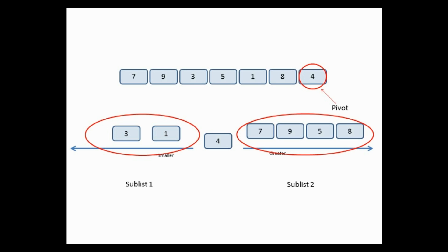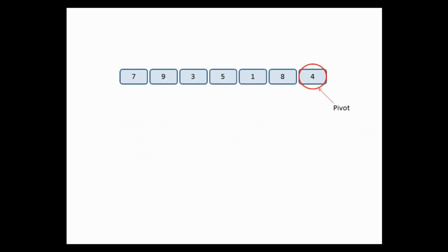The question is: how do we place all the smaller elements to the left of the pivot and all the greater elements to its right? Here is our array with the pivot as the last element. We take two variables: one to iterate through the list, let's call it I, and one to point to the index where we will divide the list, let's call it P.